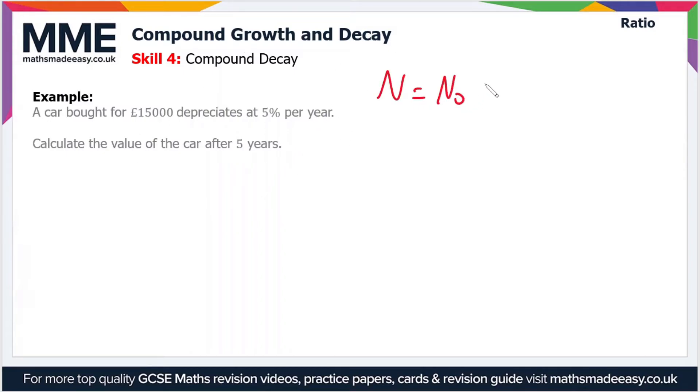So again, let's just write the formula. N equals N₀ times 1, and in this case it's decay, so we'll just write minus, and then it's the percentage divided by 100, to the power of the number of time periods n.